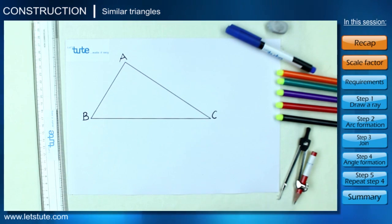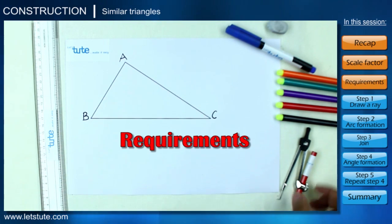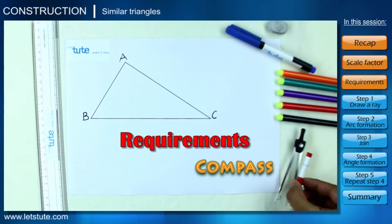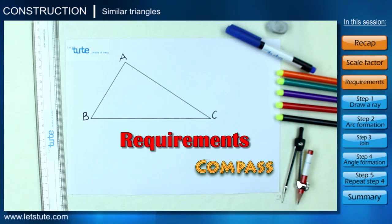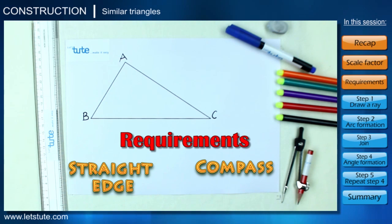For the construction of a similar triangle, we will have certain requirements. The first requirement will be a compass, which is the name for a geometrical instrument - do not confuse it with the one we use for following directions. We will also require any kind of instrument that will help us to draw straight lines and it will not have any markings on it, for example a straight edge.